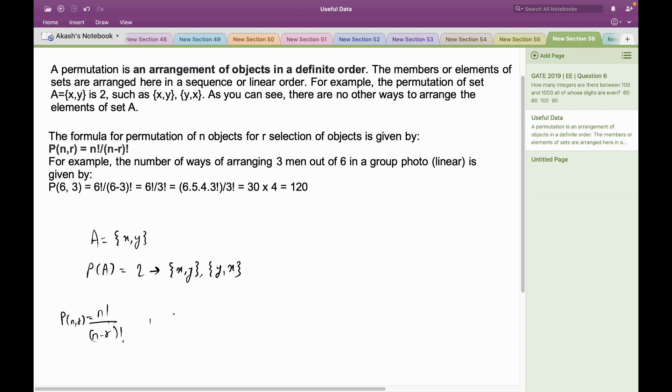For example, the number of ways of arranging three men out of six in a group photo linearly: we have three spots and out of these three spots we have to choose among six men. The first spot can be filled in 6 different ways, the second spot in 5 different ways, and the third spot in 4 different ways. Together, the number of ways in which we can arrange three men out of six in a group photo is 6 × 5 × 4 = 120.